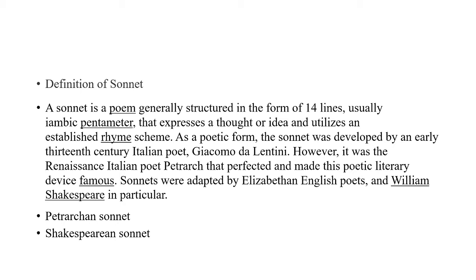The first type is the Italian or Petrarchan sonnet. The name is given to this type of sonnet after the 14th century Italian poet Petrarch, as Petrarch perfected and made famous this device of poetry. Therefore it is called the Petrarchan or Italian sonnet. The Petrarchan sonnet falls into two main parts.